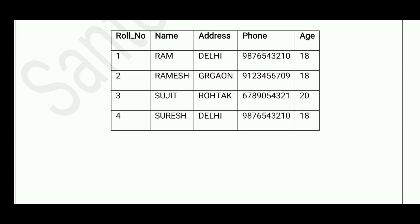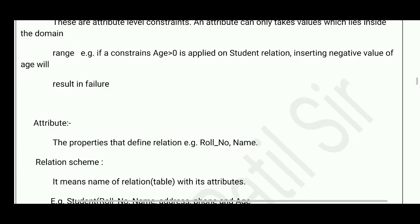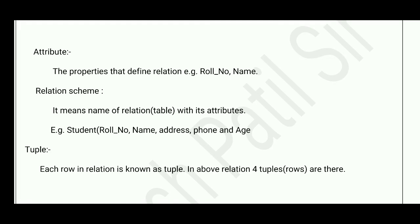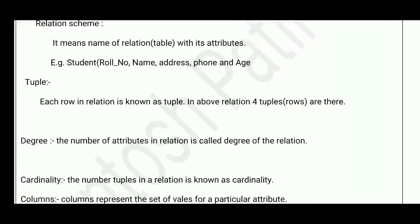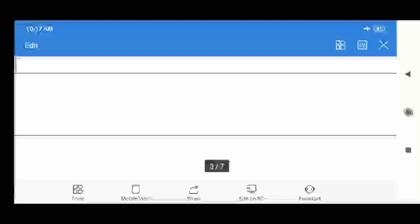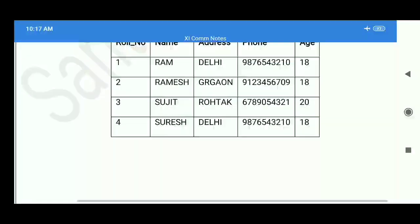Attribute means the properties that define a relation. For example, roll number and name are attributes — column names are called attributes. Relation schema means the name of a relation with its attributes. For example, 'Student' is the relation (table) and the attributes are roll number, name, address, phone number, and age. Tuple means each row in a relation — in the above relation there are four tuples.